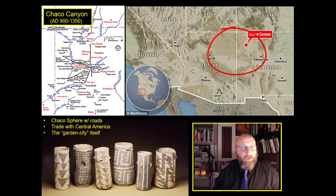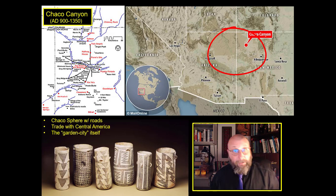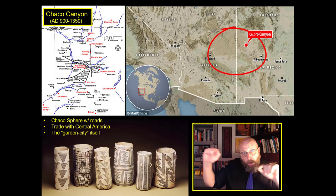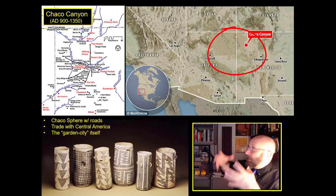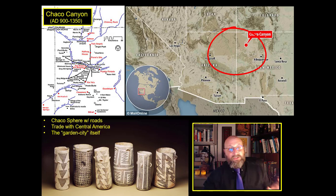Modern archaeologists have called this large area, this kingdom of Chaco Canyon, the 'Chaco Sphere.' One of the more interesting things about the Chaco Sphere is you can tell from the map on the upper left — there are actually a series of roads that spoke outwards from Chaco Canyon itself, connecting the main city of Chaco to these more distant communities and distant great houses scattered across the entire Chaco Sphere.